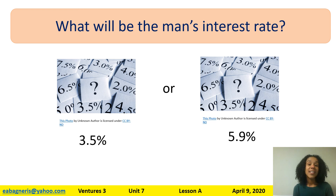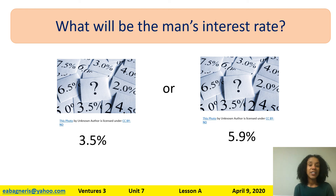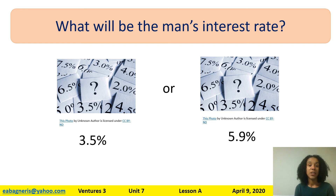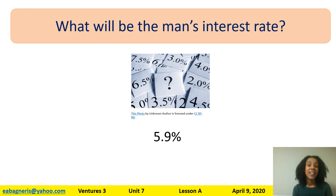Finally, they discuss the man's interest rate. The lender tells the man he can have the home loan, and the man asks: what will my interest rate be? Is it 3.5% or 5.9%? The lender tells the man that his interest rate will be 5.9%.